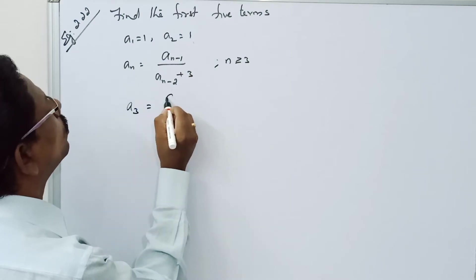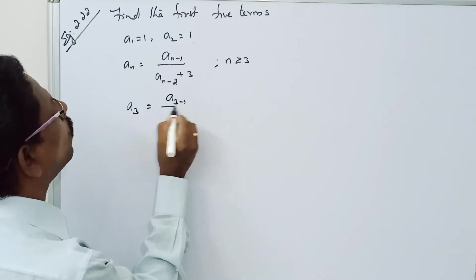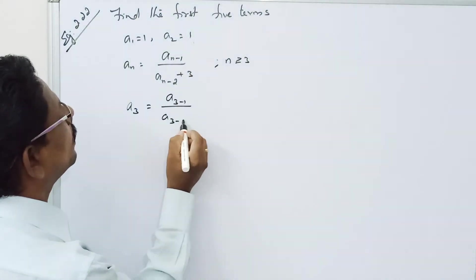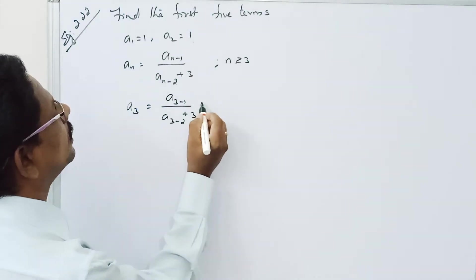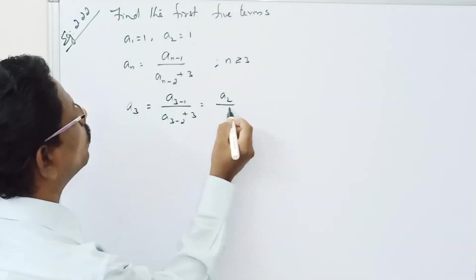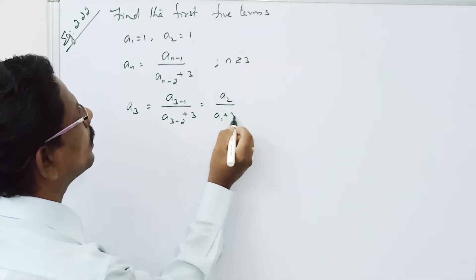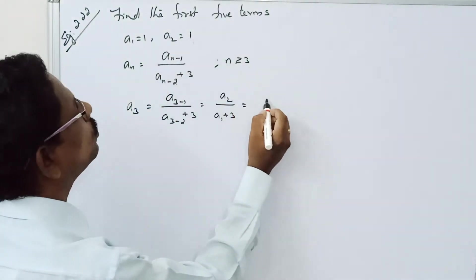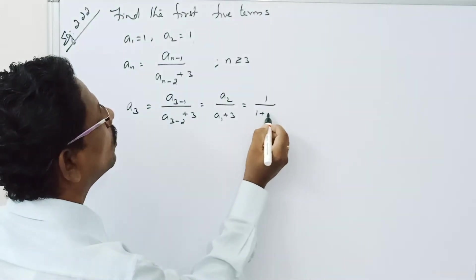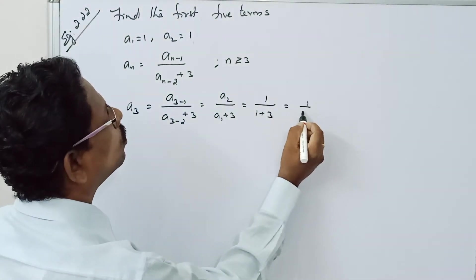A3 equal to A3 minus 1 by A3 minus 2 plus 3. So A3 minus 1, A2 by A1 plus 3. What is the value of A2? 1. 1 by 1 plus 3 equal to 1 by 4.